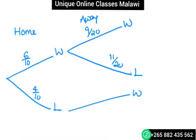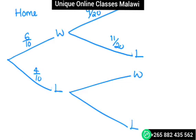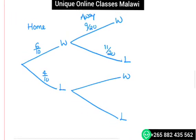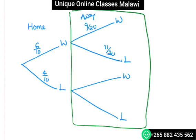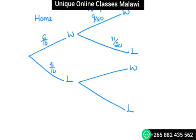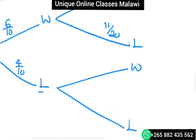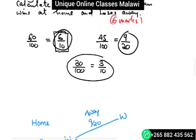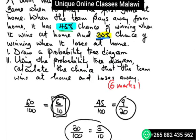For the losing branch, we have winning and losing away. After losing at home, the team has a 30 percent chance of winning when it loses at home. So losing at home means winning away with 30 percent, which is 3 over 10.